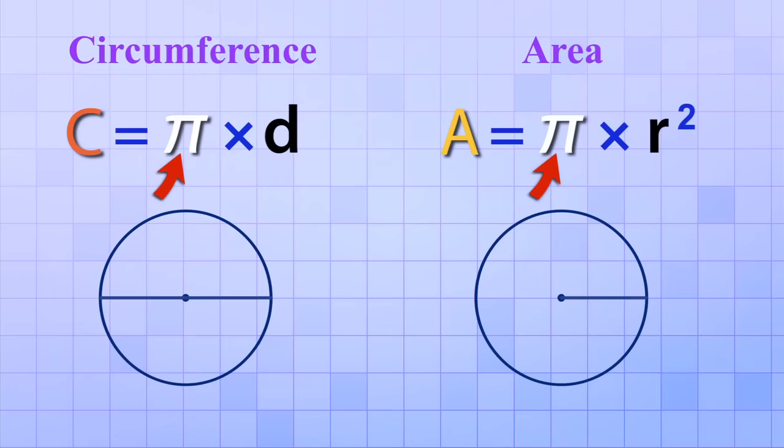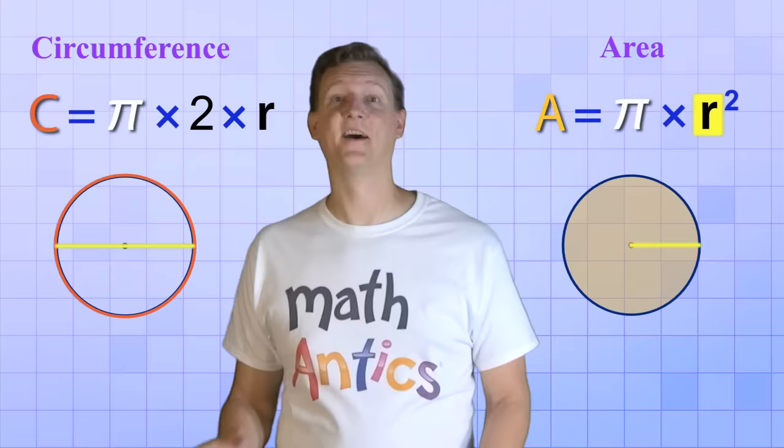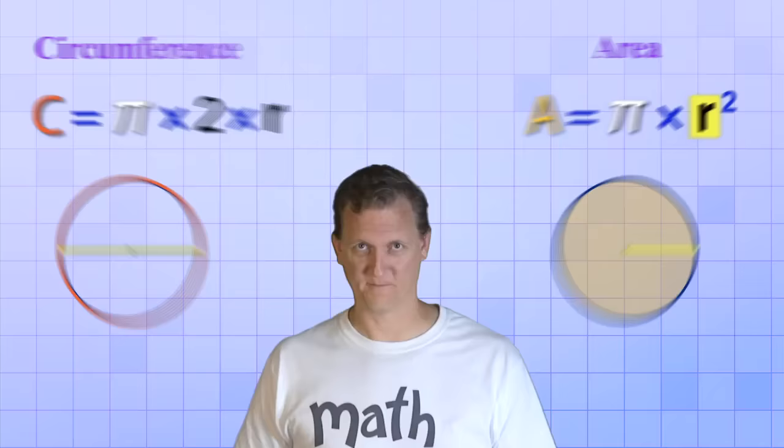In each of them, you're multiplying Pi by part of a circle to find either the circumference or the area. In the case of the circumference, you're multiplying Pi times the diameter. And in the case of the area, you're multiplying Pi times the radius squared. But do you remember the relationship between the radius and the diameter? Diameter is just 2 times the radius. So we could rewrite our formula for circumference like this: Circumference equals Pi times 2 times r.